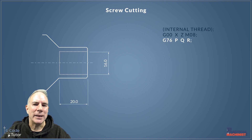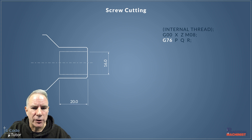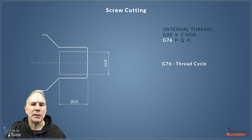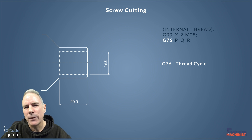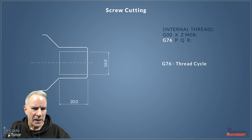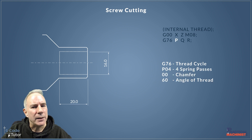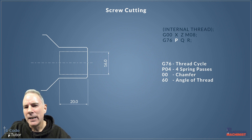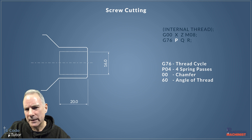This brings us to our first line of G76. G76 is our screw cutting cycle. We need to list G76 so the machine knows we're talking about screw cutting and all the following information relates to that. After our G76 we have a P value. The P value contains three lots of information, and it's often confusing to some people.